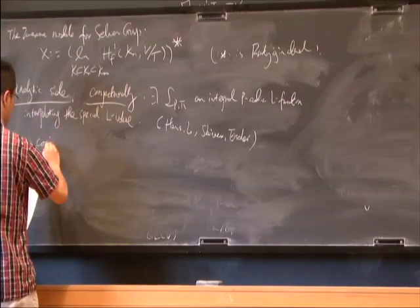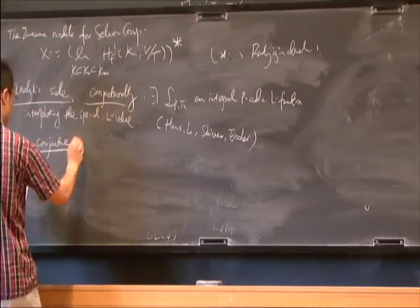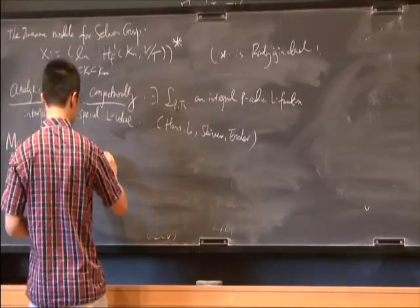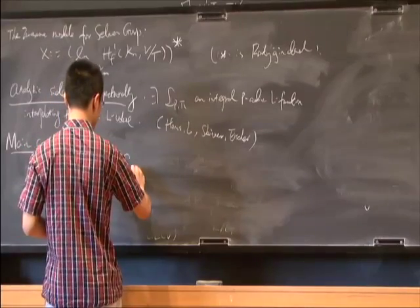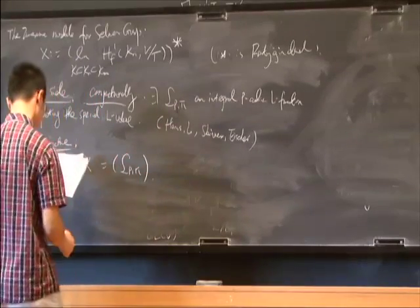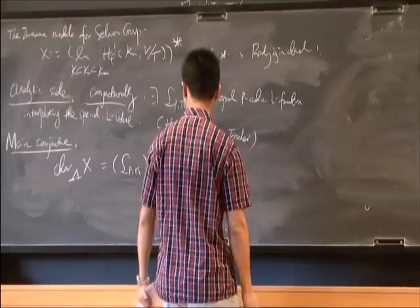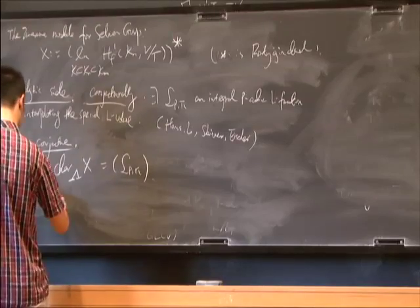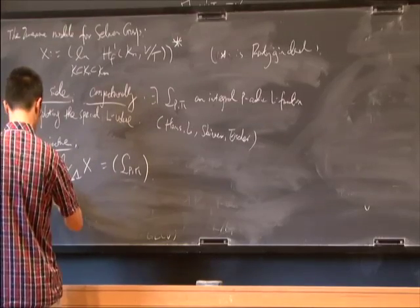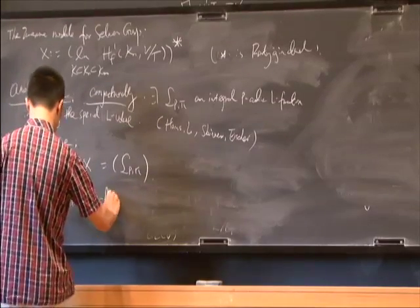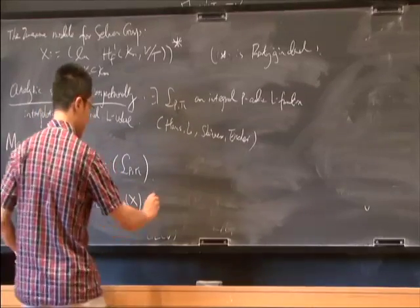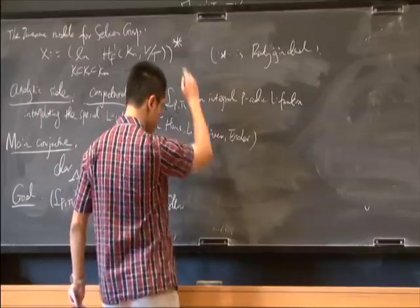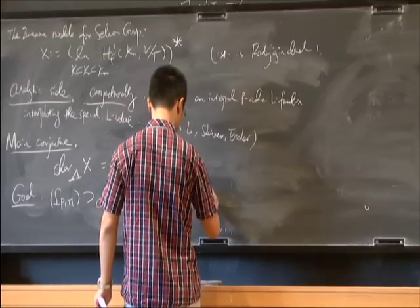The main conjecture is that the characteristic ideal of λ of X is generated by the p-adic L-function. Our goal is to prove one containment of this ideal, following the ideas of Skinner and Urban but generalized to a more general setting.